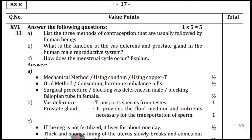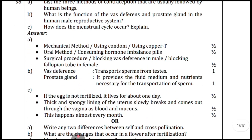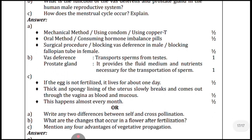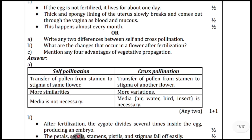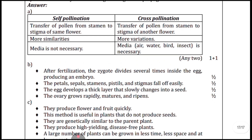Question thirty-eight: name three methods of contraception usually followed by human beings. Part B: what is the function of vas deferens and prostate gland in the human male reproductive system? Part C: how does the menstrual cycle occur — explain. Part D (alternate option): write any two differences between self-pollination and cross-pollination, what are the changes that occur in a flower after fertilization, and mention any four advantages of vegetative propagation.